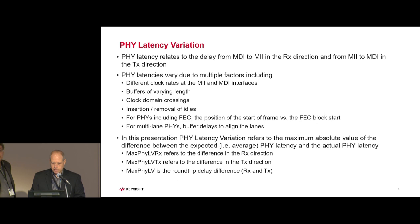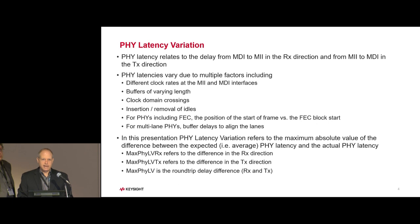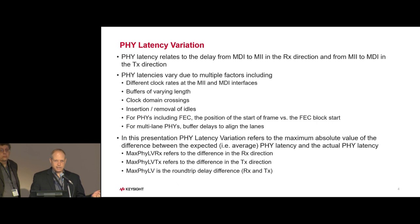For multi-lane PHYs, buffer delays are added to align the frames. Because delays are added to each lane and those delays differ, that affects the latency of the PHY — additional delay is added within the PHY path between the connector and the MAC. In this presentation, PHY latency delay variation refers to the maximum absolute value of the difference between the expected (average) PHY latency and the actual PHY latency. Max PHY latency variation for RX is in the RX direction, TX in the TX direction, and the combined term covers the round trip — the combination of both TX and RX variation.